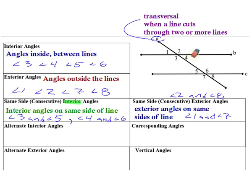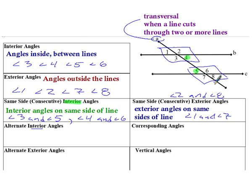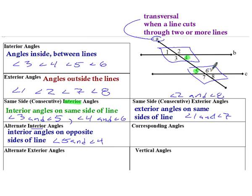Alternate interior angles — if you think about the word 'alternate,' that means you're switching sides. The word interior is there too, so we're looking at interior angles 3, 4, 5, and 6 that switch sides of the transversal. So my alternate interior pairs could be angles 5 and 4, or angles 3 and 6.